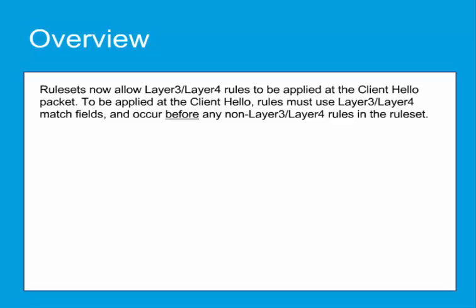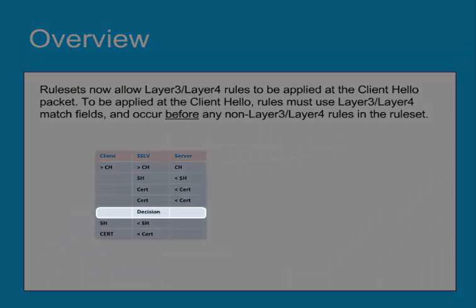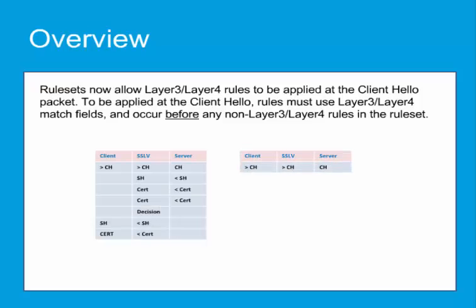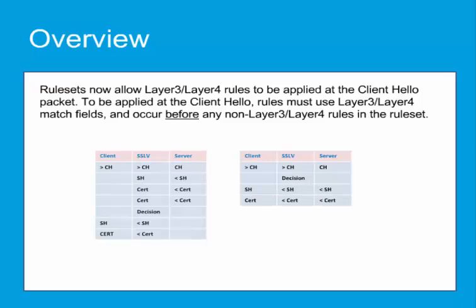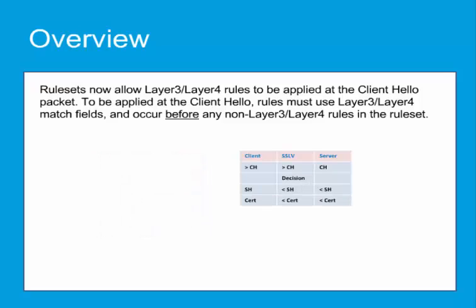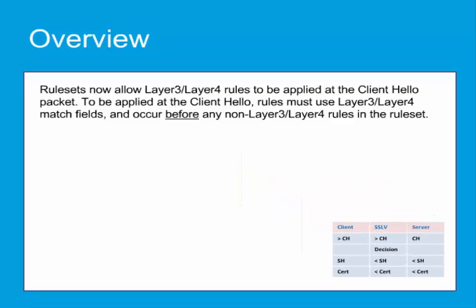If SSL traffic traverses the SSL Visibility Appliance more than once, a Layer 3, Layer 4 rule can be applied at the client hello message. Previously, a rule action could only take effect after the SSL certificate handshake was completed between the server and the SSL Visibility Appliance. Now, rule sets will allow Layer 3, Layer 4 rules to be applied at the client hello message.